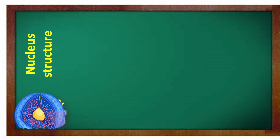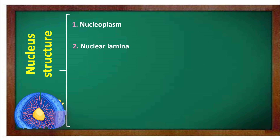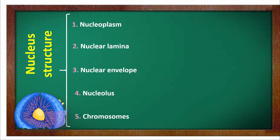Nucleus structure. The nucleus has 5 parts in its structure: nucleoplasm, nuclear lamina, nuclear envelope, nucleolus, and chromosomes.